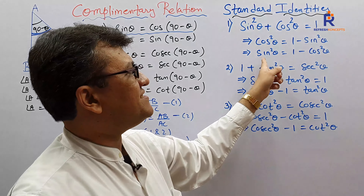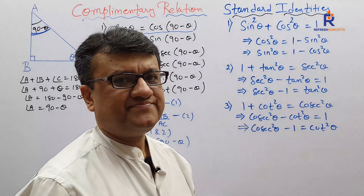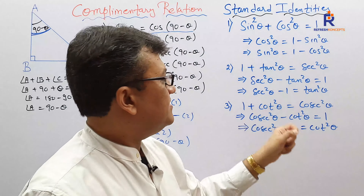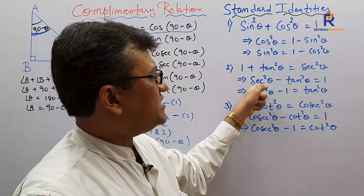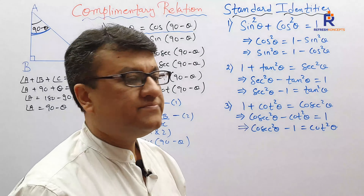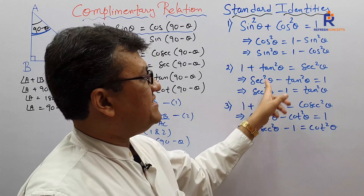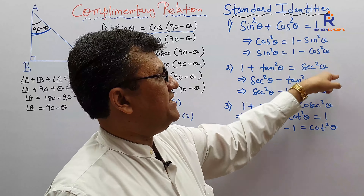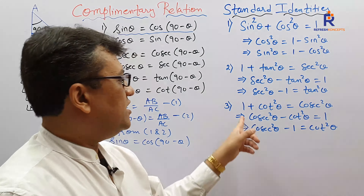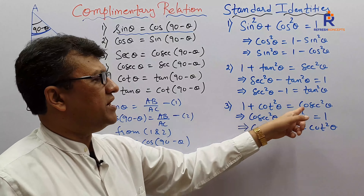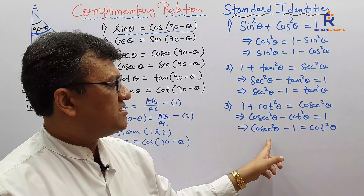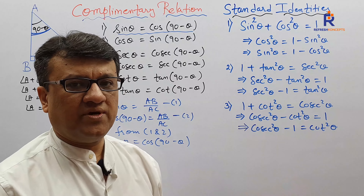Likewise, sine squared equals 1 minus cos squared. From the second identity: 1 plus tan squared equals sec squared, which gives sec squared minus tan squared equals 1, or sec squared minus 1 equals tan squared — again pure math. And 1 plus cot squared equals cosec squared, so cosec squared minus cot squared equals 1, or cosec squared minus 1 equals cot squared.